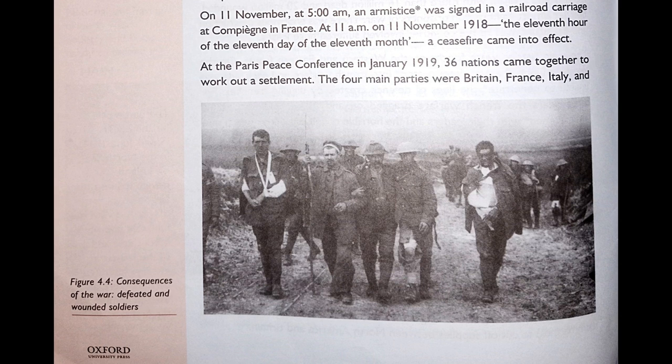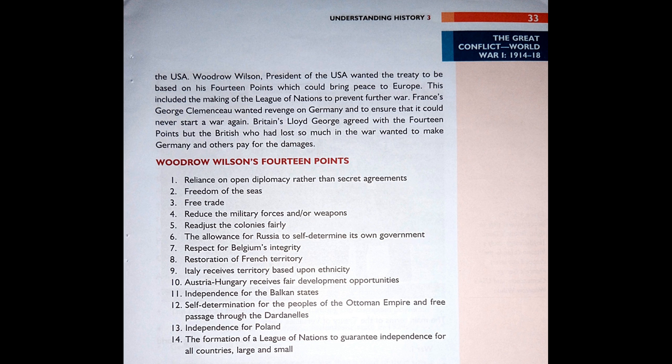The Paris Peace Conference: In January 1919, 36 nations came together to work out a settlement. The four main parties were Britain, France, Italy and the USA. President Woodrow Wilson of the USA wanted the treaty to be based on his 14 Points, which could bring peace to Europe. This included the making of the League of Nations to prevent further war.